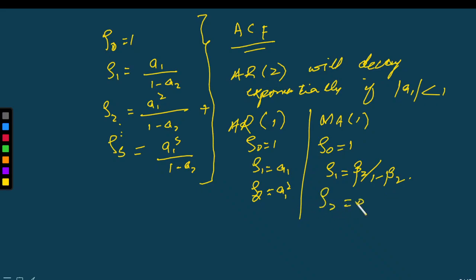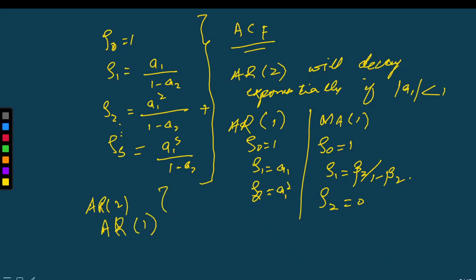For MA1, rho becomes zero after lag 1. For AR1, AR2, AR3, the ACF will never become immediately zero after a given order lag. For an MA1 model the ACF cuts off after lag 1, and for MA2 it cuts off after lag 2.